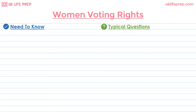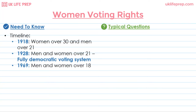Another extremely common topic is women's voting rights, and it is crucial to remember key dates. In 1918, women over the age of 30 were given the right to vote, while at the same time men could vote from the age of 21. In 1928, the voting age for women was reduced to 21, the same as men, establishing a fully democratic voting system. In 1969, the voting age for both men and women was reduced to 18, where it stands today.